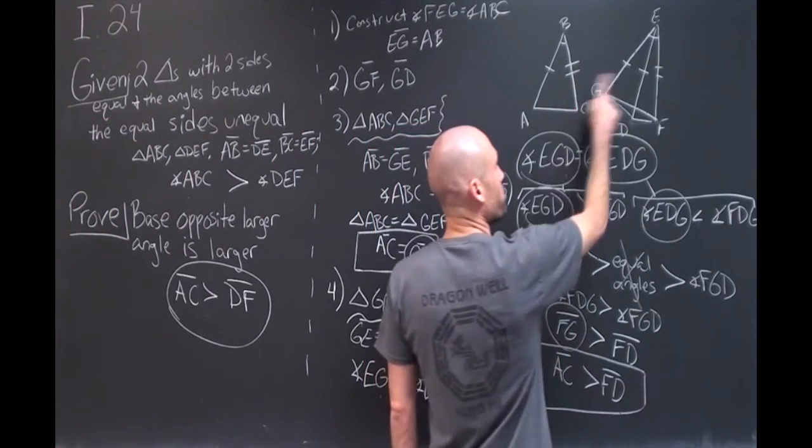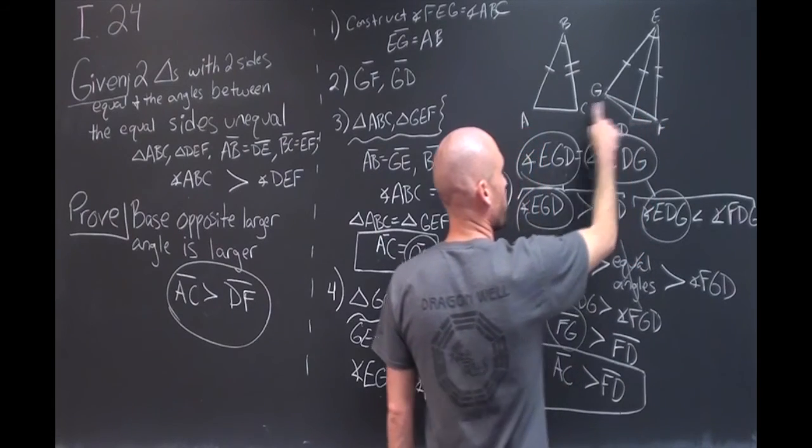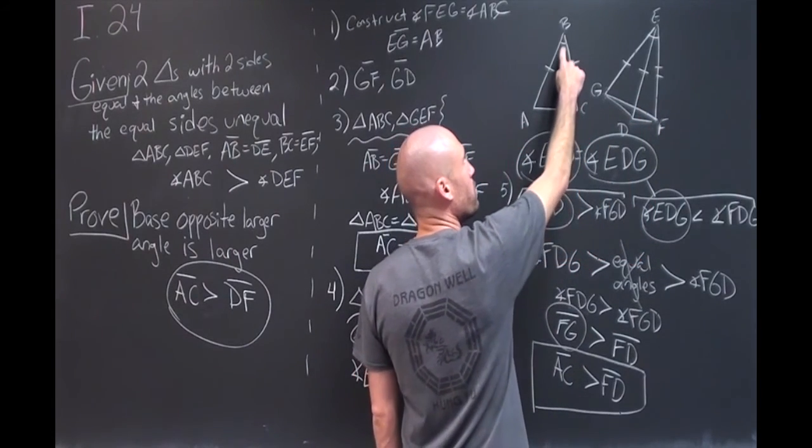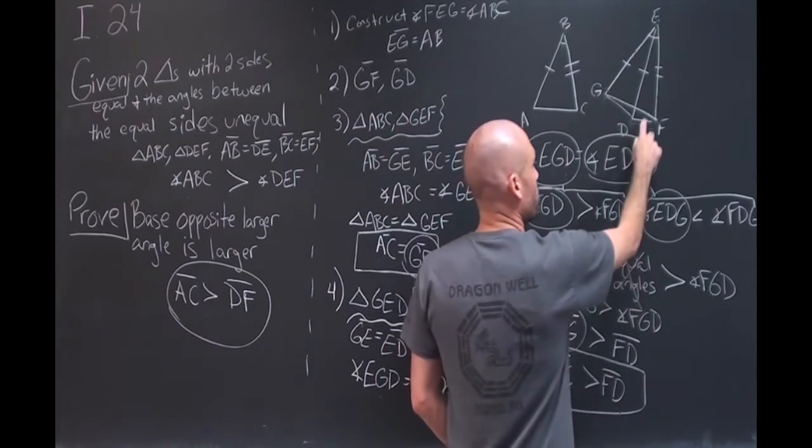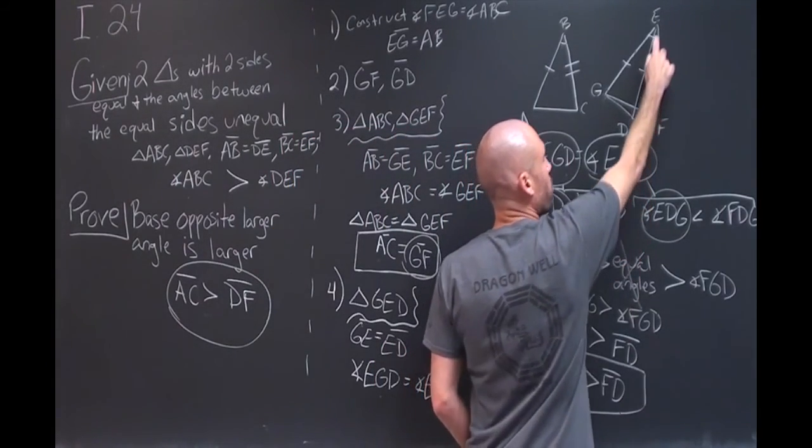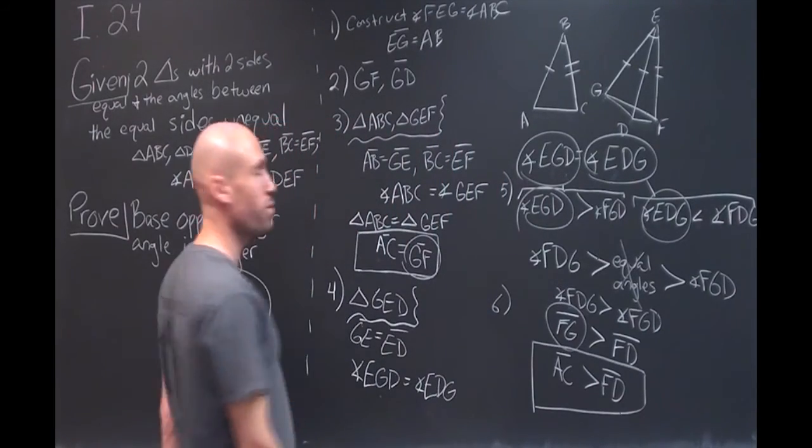And so essentially what we've done is by mapping this triangle on here, we've compared the angles. It turns out that the base of the triangle, which has the larger angle between the equal sides, is larger than the base over here of the triangle that had the smaller angle between equal sides, which is what we were looking to prove.